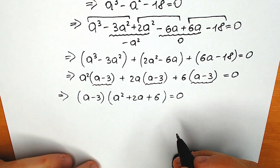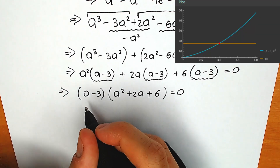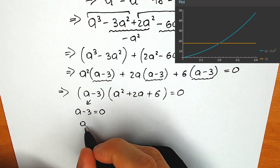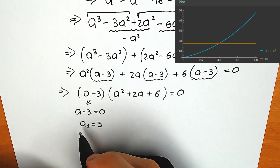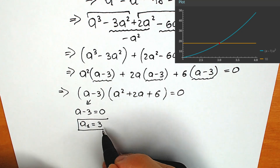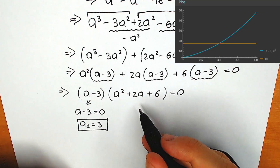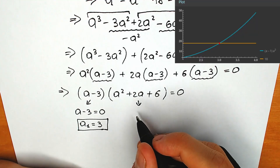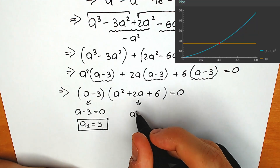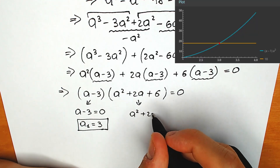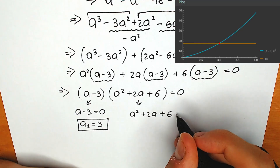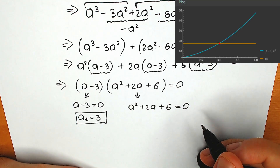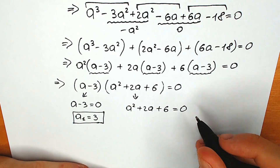A product of two factors equals zero when the first factor equals zero. So a minus 3 equals zero gives us our first root: a₁ equals 3. Or the second factor equals zero, which gives us a quadratic equation: a squared plus 2a plus 6 equals zero. Let's solve it with the basic method of coefficients.